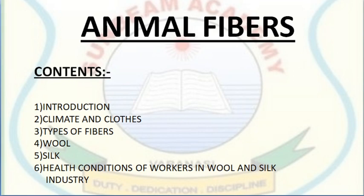For revising the chapter, I am going to share my screen. The chapter animal fibers has certain contents: the first is introduction, then the relationship of our clothes with our climate, third the various types of fibers based on their sources, then the two animal fibers — wool and silk — and finally the health conditions of workers in the wool and silk industry.